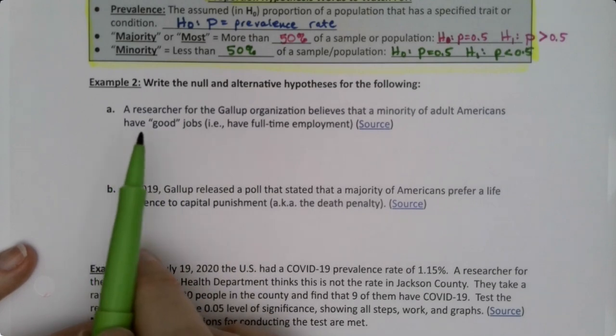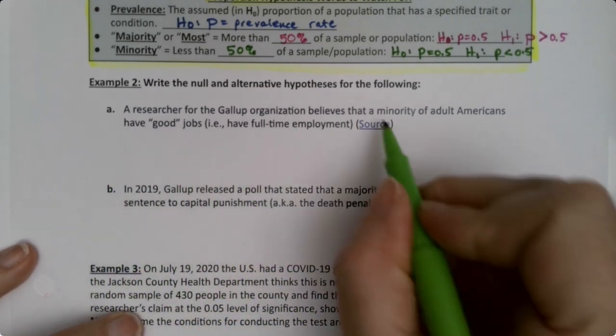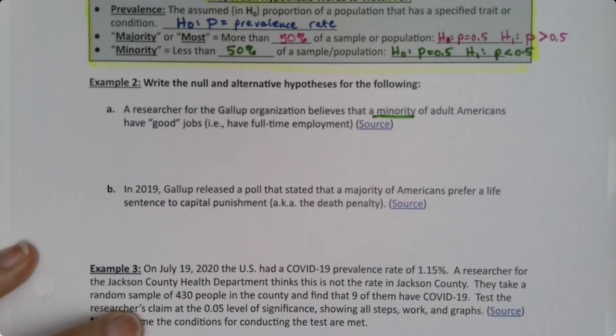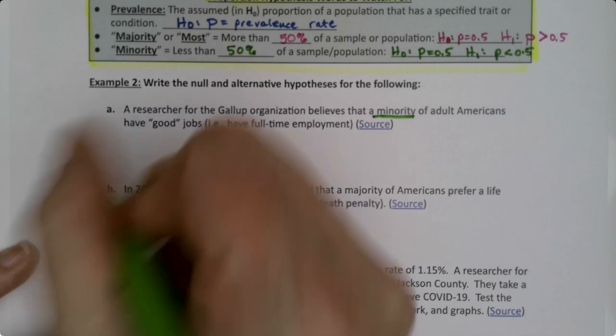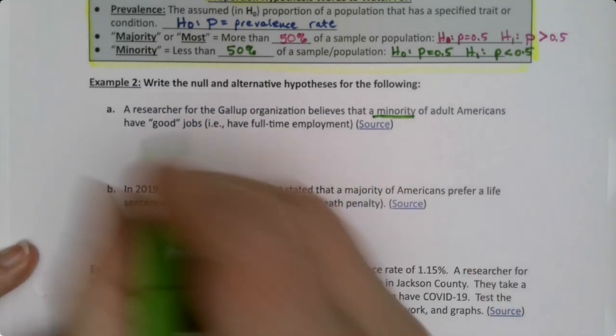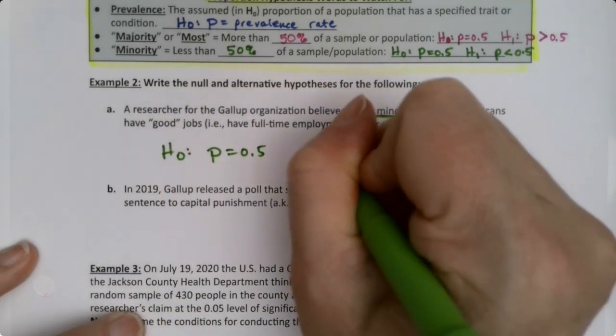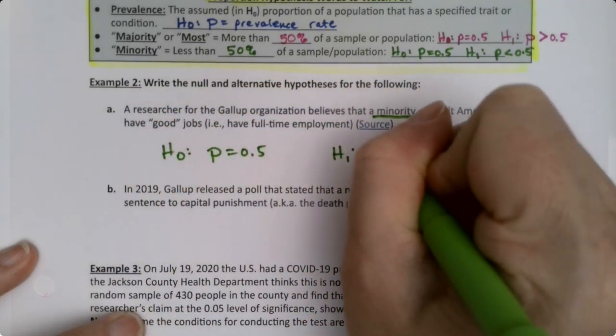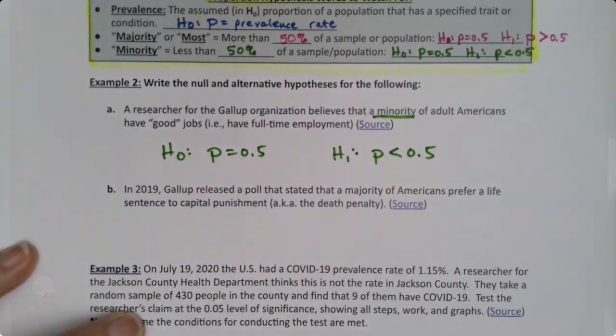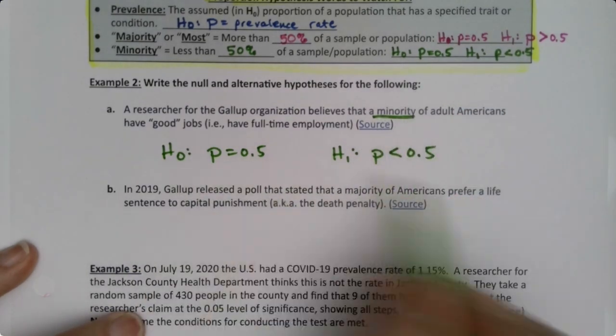Let me give you an example. A researcher for the Gallup organization believes that a minority of adult Americans have good jobs, i.e., have full-time employment. Once I see that, that's all I need. I know the null is P equals 0.5 and the alternative is P is less than 0.5, period. That word gives me all of that.